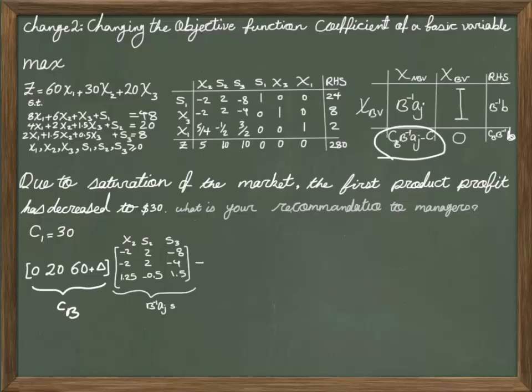If you remember from your table, B inverse Aj is given under non-basic variable in your final table. So I put my non-basic variable coefficients for B inverse Aj, and then minus Cj.